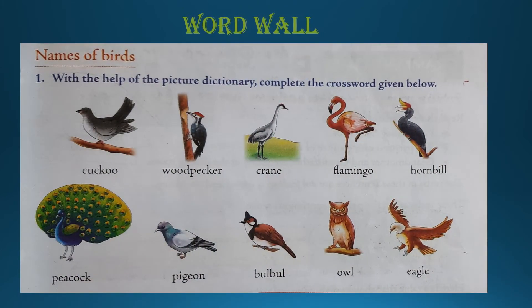Now students, this is the word wall exercise given in your book on page number 57. Here is a list of birds. Let us read the names first: Cuckoo, Woodpecker, Crane, Flamingo, Hornbill, Peacock, Pigeon, Bulbul, Owl and Eagle. We have some questions given in our book and we have a crossword puzzle. We will read the questions, then write the name of the bird according to the options given.